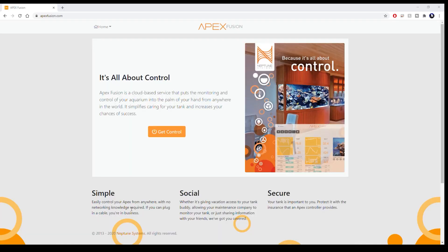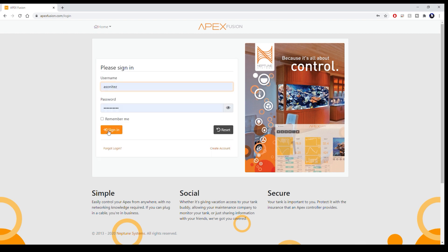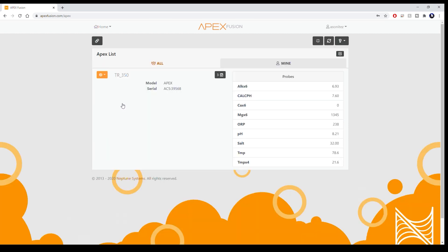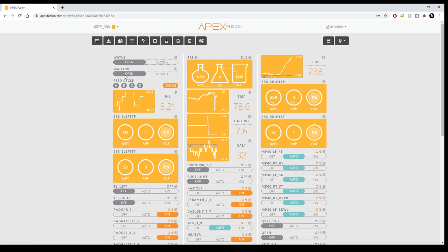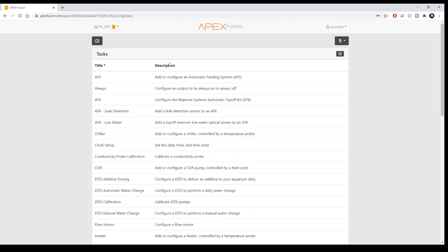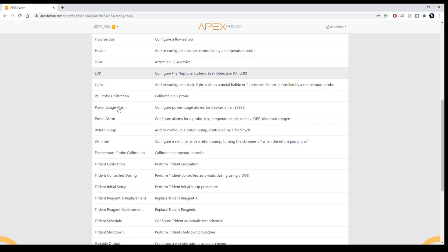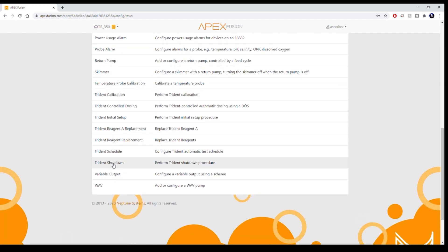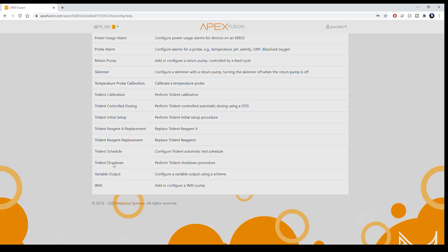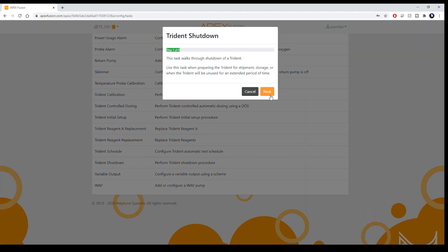So the first thing you should do is go through the Trident shutdown procedure in your Apex. If you don't know how to do this and Google didn't help and you haven't figured out how to access the tasks menu on your Apex, then stop. Find a grown-up, make a reefer friend who knows their way around the Apex menus, or just send it to Neptune to fix it. But once you have chosen the shutdown procedure and waited patiently for your Trident to shut down and purge all of the lines, disconnect it from the one link and take it to a brightly lit area for your next step in the surgery.